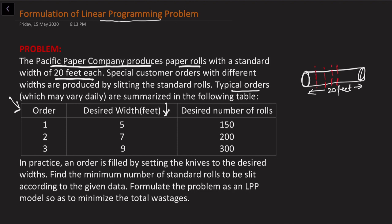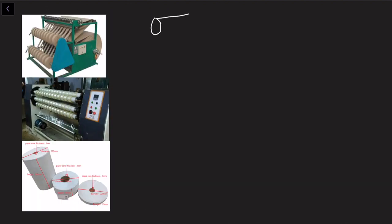The desired number of rolls is also mentioned. In practice, an order is filled by setting the knives to the desired width. We need to find the minimum number of standard rolls to be slitted according to the given data and formulate the problem as an LPP model so as to minimize the total wastage. To understand this, the width of the roll is given as 20 feet and we want to slit it to get desirable sub-rolls based on customer requirements. This is shown in the diagram - this is the main roll.